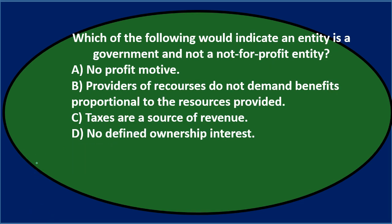Next question: which of the following would indicate an entity is a government and not a not-for-profit entity? Either A, no profit motive; B, providers of resources do not demand benefits proportional to the resources provided; C, taxes are a source of revenue; or D, defined ownership interest.